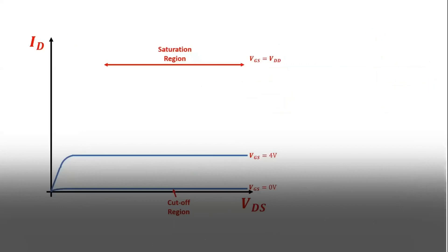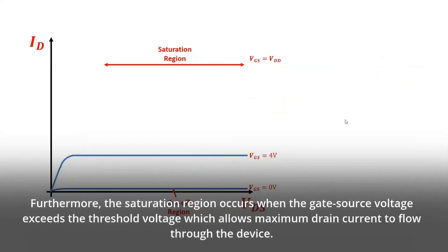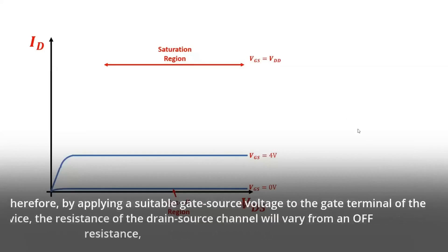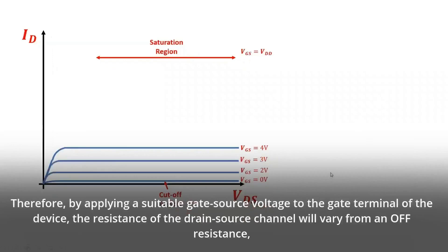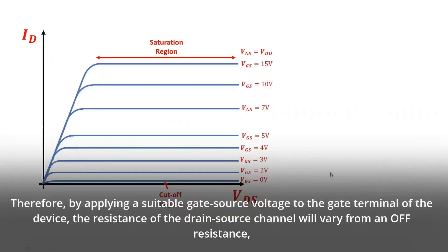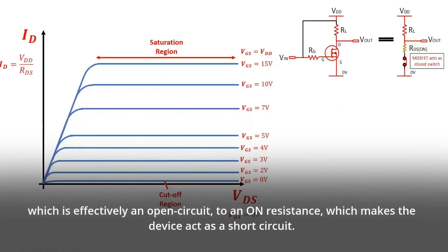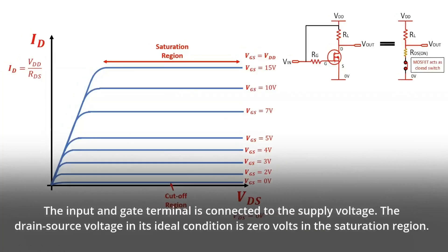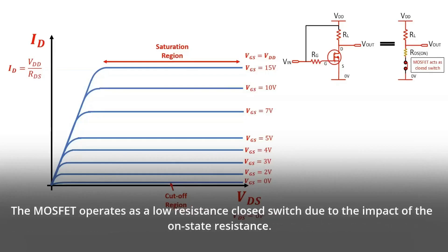The saturation region occurs when the gate source voltage exceeds the threshold voltage, which allows maximum drain current to flow through the device. By applying a suitable gate source voltage to the gate terminal, the resistance of the drain-source channel will vary from an off-resistance, which is effectively an open circuit, to an on-resistance, which makes the device act as a short circuit. The input and gate terminal is connected to the supply voltage, and the drain-source voltage in its ideal condition is 0 volts. The MOSFET operates as a low-resistance closed switch due to the impact of the on-state resistance.